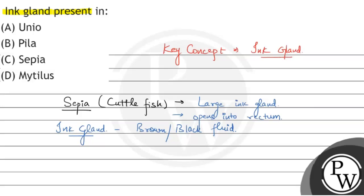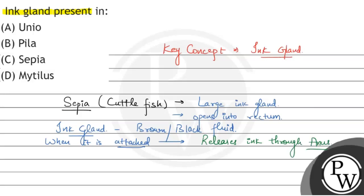When Sepia is attacked by an animal, the ink is released through the anus. So whenever it is attacked, it releases ink through the anus.